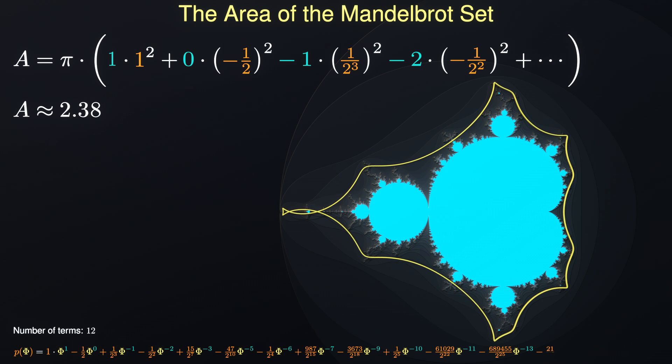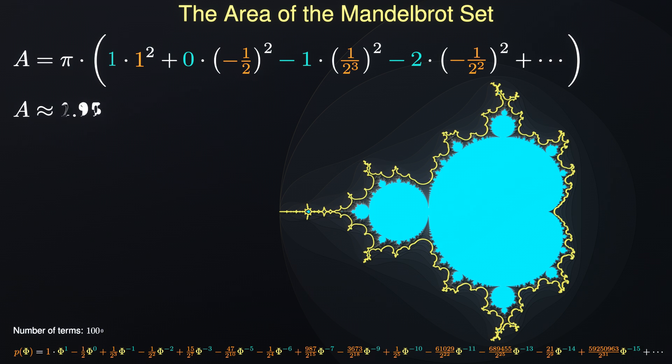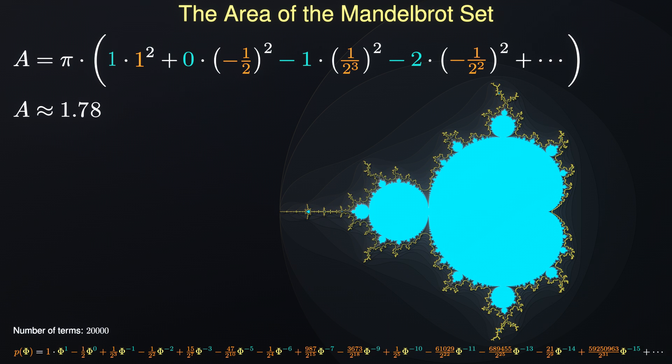In our computation we include 20,000 coefficients. Even at this level of approximation, one can clearly see the gap between the circle mapping and the true boundary. So the result can only be considered as an upper bound on the area of the Mandelbrot set.